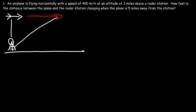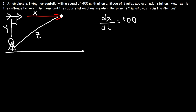We can turn this into a right triangle. Let's call the horizontal distance X, the vertical distance Y, and the direct distance Z. The airplane is moving at 400 miles per hour horizontally, so dx/dt = 400. Our goal is to calculate how fast the distance between the plane and the radar station is changing when the plane is 5 miles away.